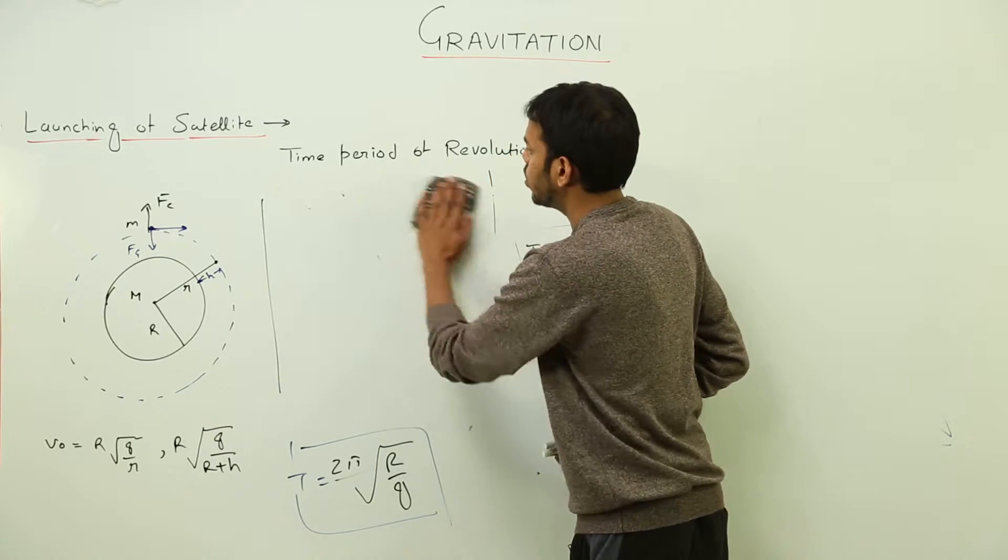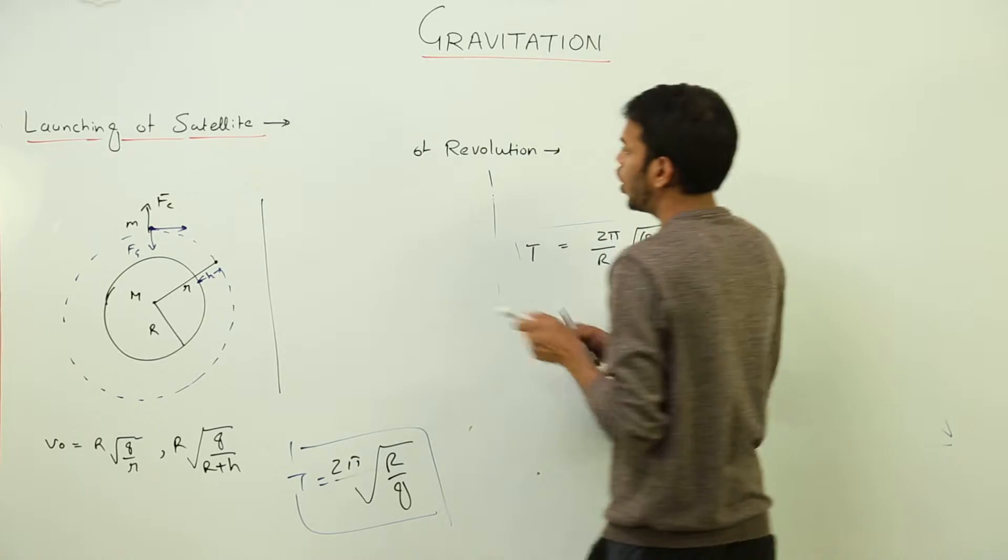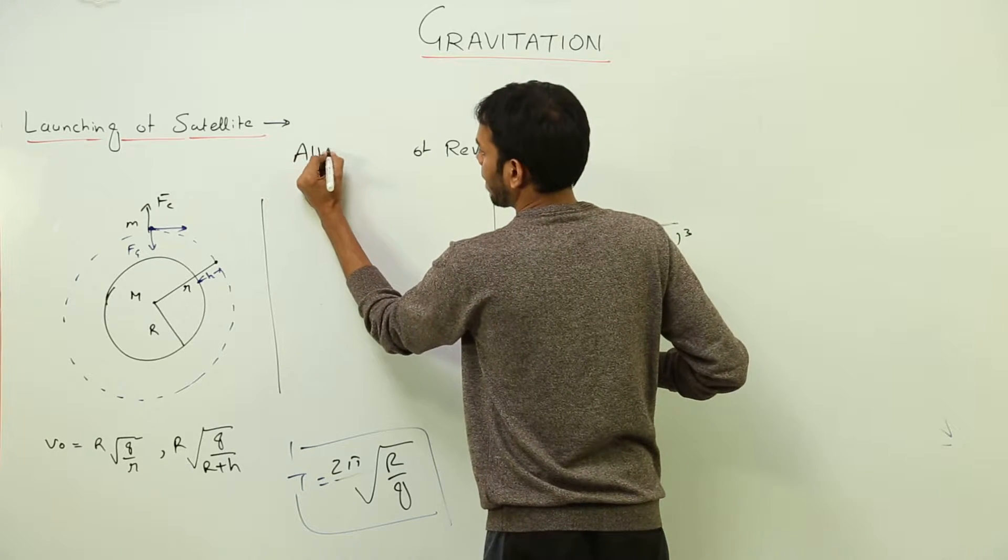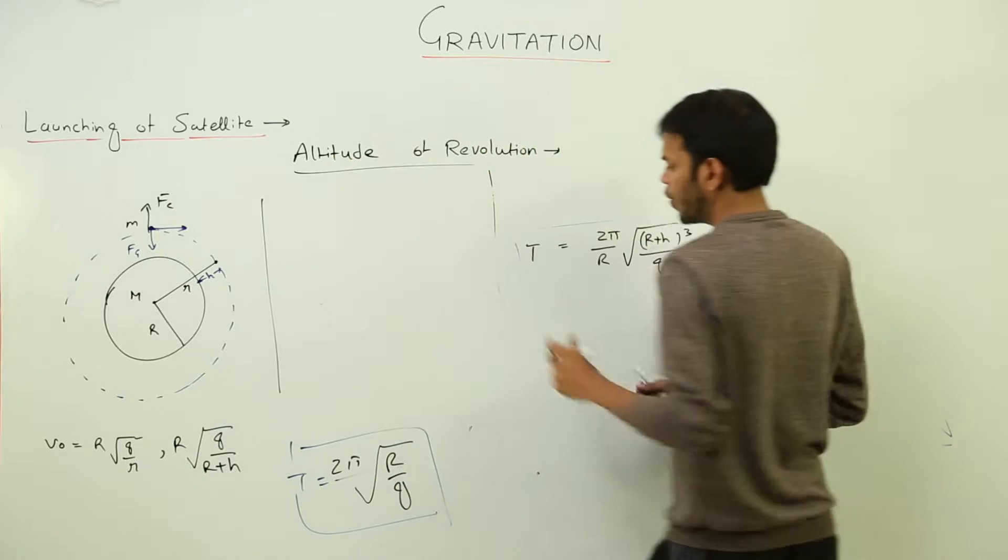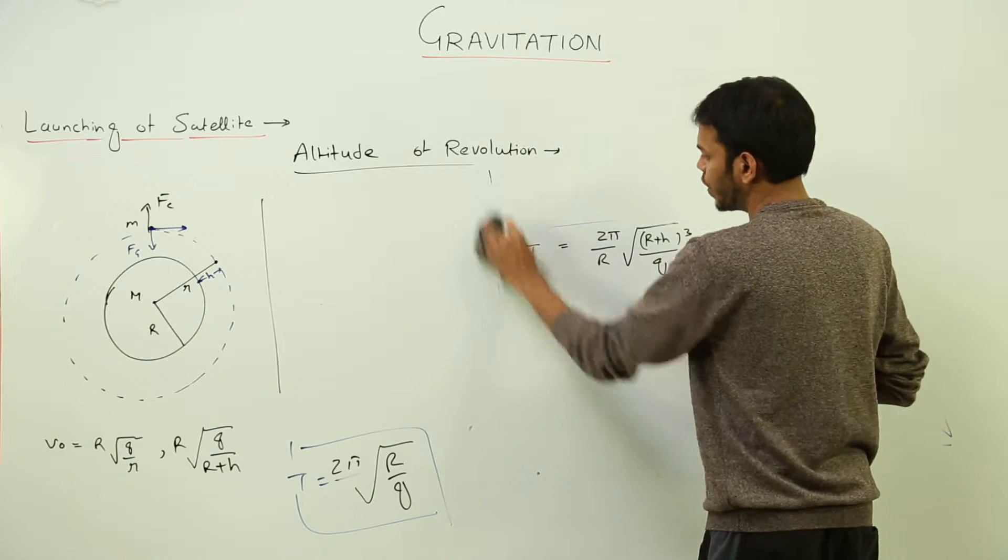See? So this derivation is for altitude. Altitude of revolution. Now, squaring both sides, what will I get?